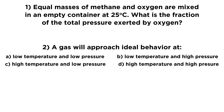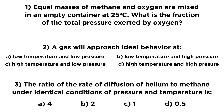Number two asks: a gas will approach ideal behavior at — and there are some options here regarding temperature and pressure. Number three says: the ratio of the rate of diffusion of helium to methane under identical conditions of pressure and temperature is — and again there are some numerical options here.